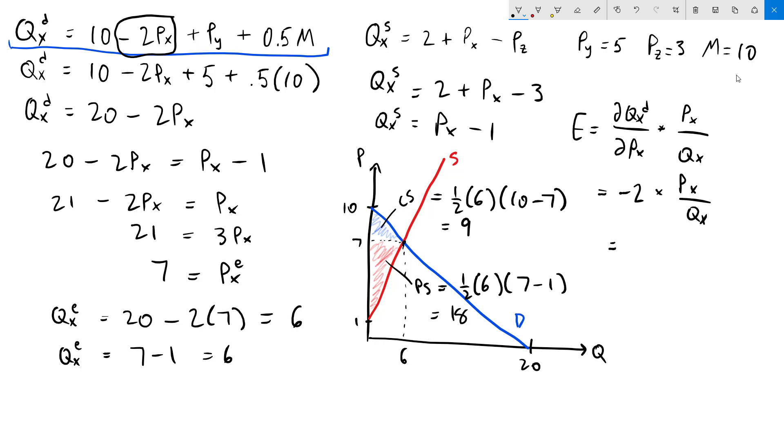Since we're at the equilibrium, we know what Px and Qx are. We solved for those earlier. Our Px is going to be 7, and our Qx is going to be 6. So what we get is negative 2 times 7 over 6, which is negative 7 thirds.